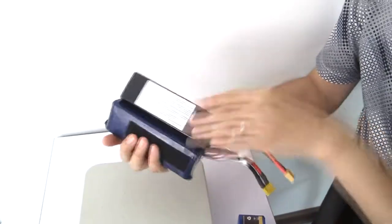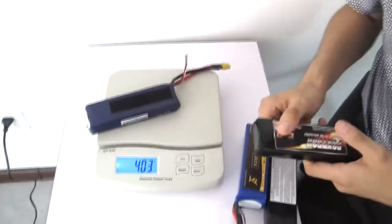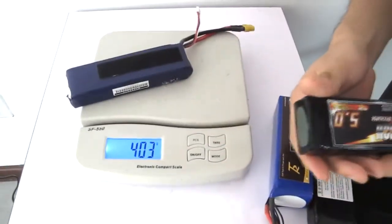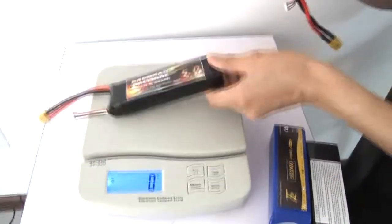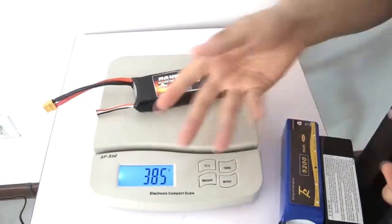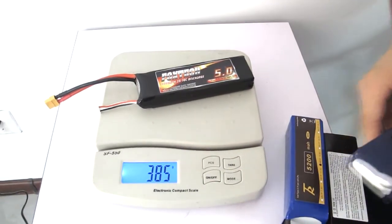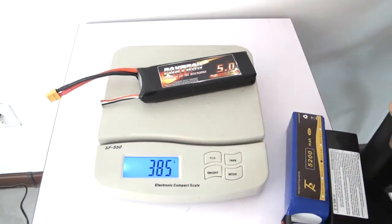But comparing with the weight, this one weighs about 403 grams, meanwhile the FOXTECH battery weighs 395 grams. That means almost also 20 grams lighter.